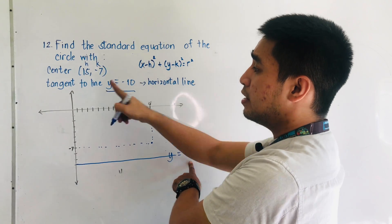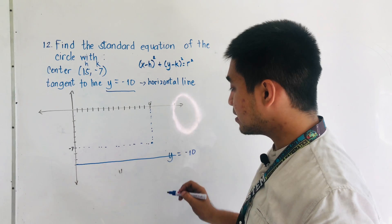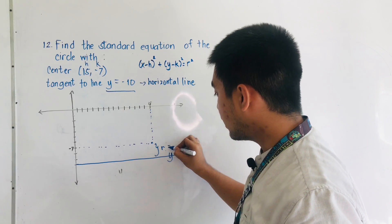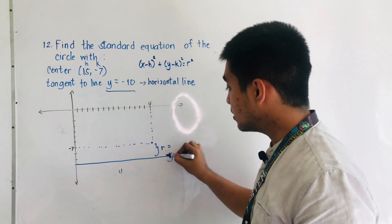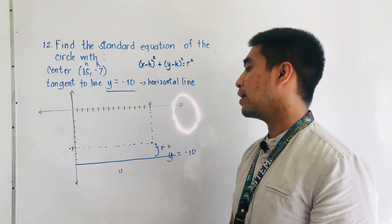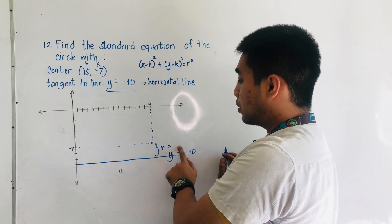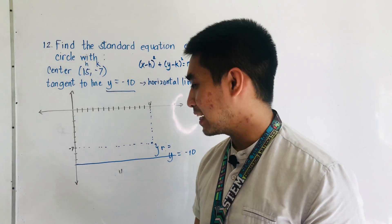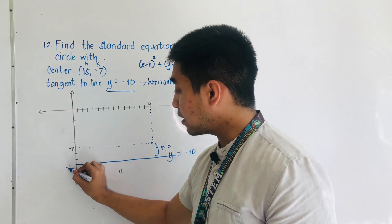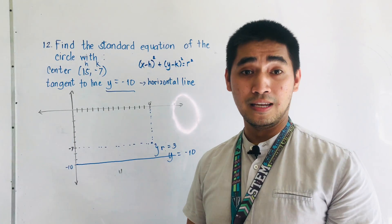Since the circle is tangent to the line y = -10 and this is the center of our circle, the radius extends from the center down to the tangent line. We can locate the radius by simply counting: from negative 7 down to negative 10, that is 1, 2, 3. Therefore, r is equal to 3.